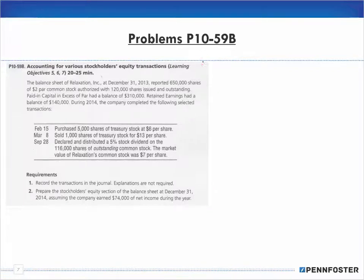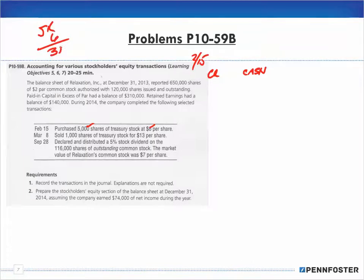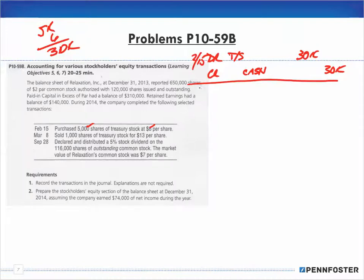On February 15th, we are purchasing 5,000 shares of Treasury stock at $6 per share. We credit cash because we're paying for the Treasury stock — 5,000 times $6 is $30,000. So we credit cash $30,000 and debit Treasury stock $30,000. Just that simple.